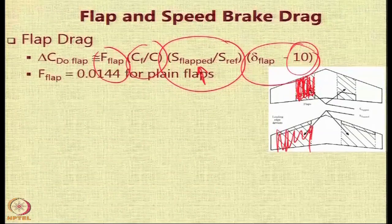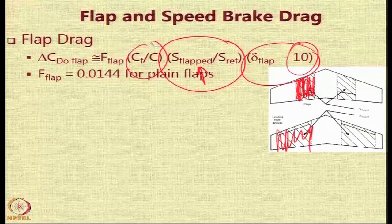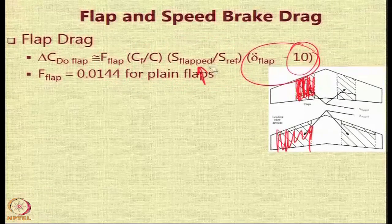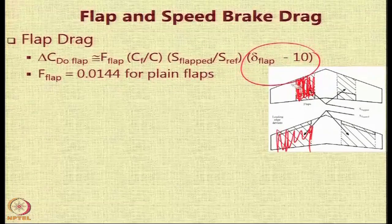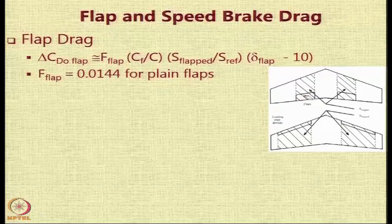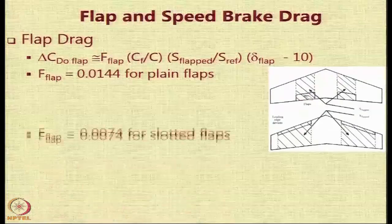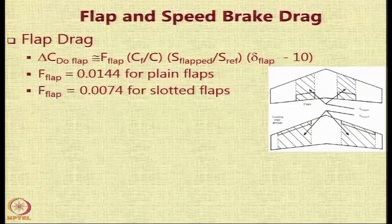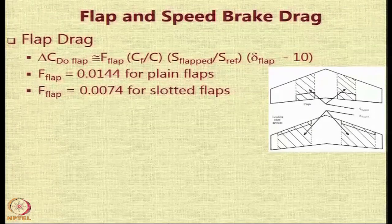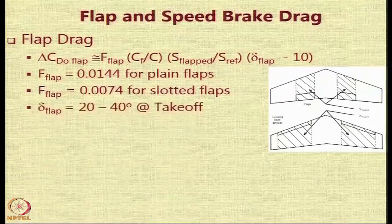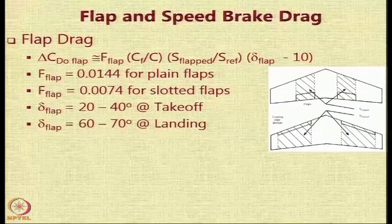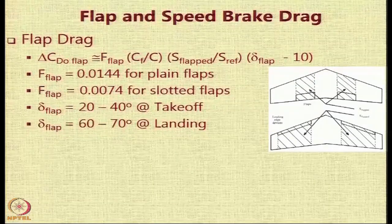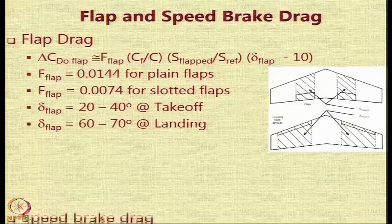Different flap types have separate F_flap values — a smaller value for plain flaps and an even smaller value for slotted flaps because they are more aerodynamically efficient. The delta_flap value is normally specified; if not, a value from historical information should be assumed.